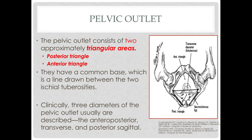The pelvic outlet consists of two approximately triangular areas: the anterior triangle, also called the urogenital triangle, and the posterior triangle, also called the anal triangle. They share a common base, which is the intertuberous diameter. Clinically, three diameters of the pelvic outlet are described: the AP diameter, the transverse diameter, and the posterior sagittal diameter.